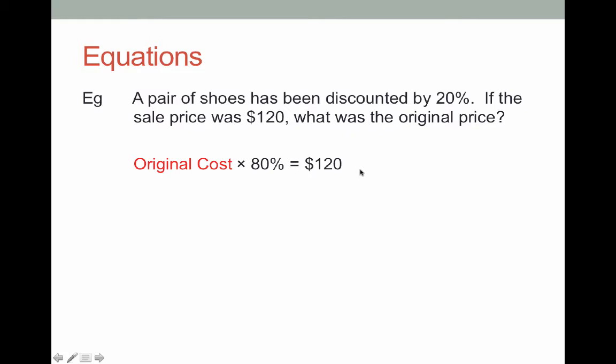To do that I need to do the opposite of times 80%. Now the opposite of times 80% is divided by 80%. This means that my original cost will be $120 divided by 80%. It is really important that when you're doing this on your calculator that you put the percentage sign in. If you just do 120 divided by 80 that will not give you the original cost.